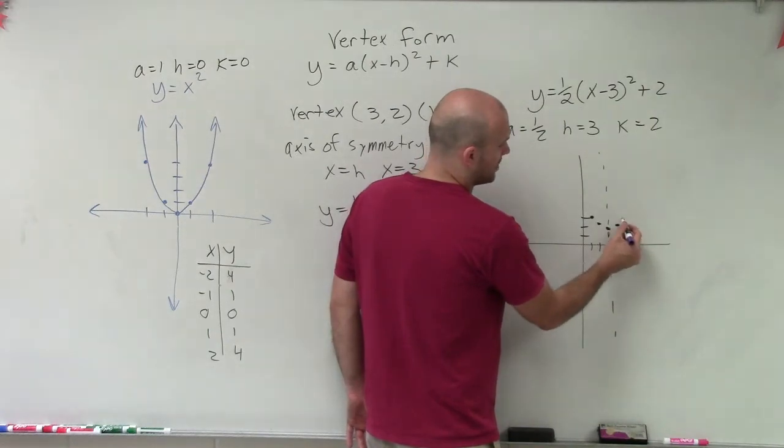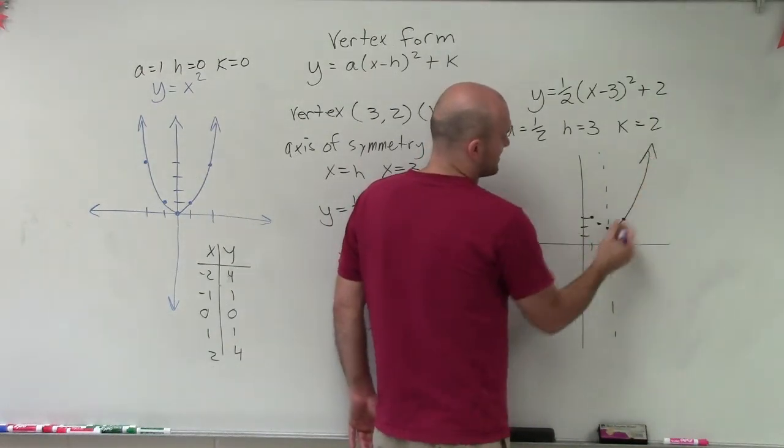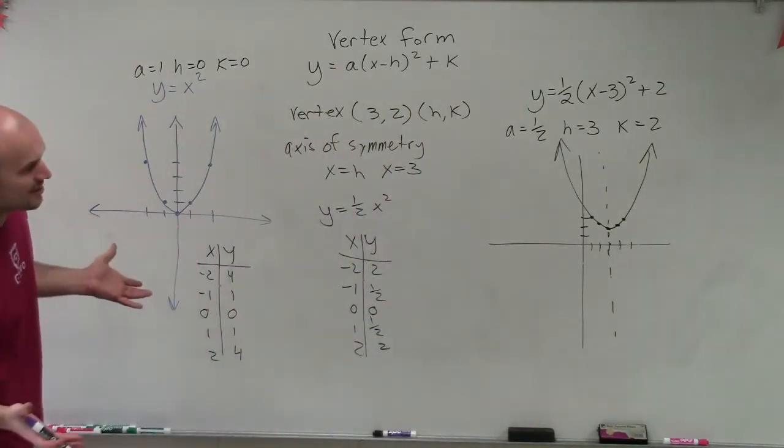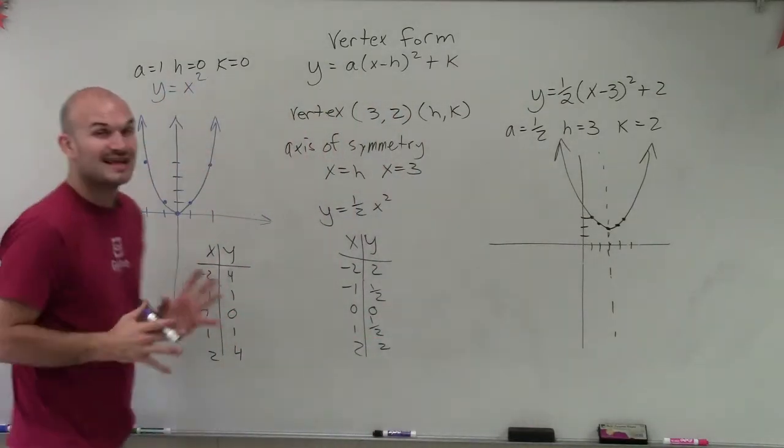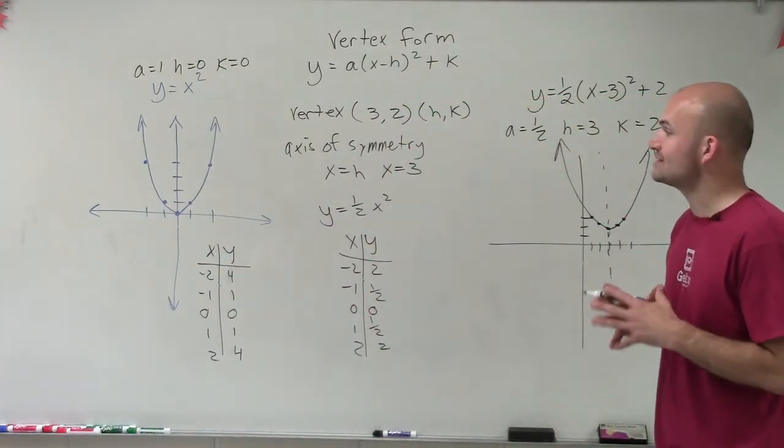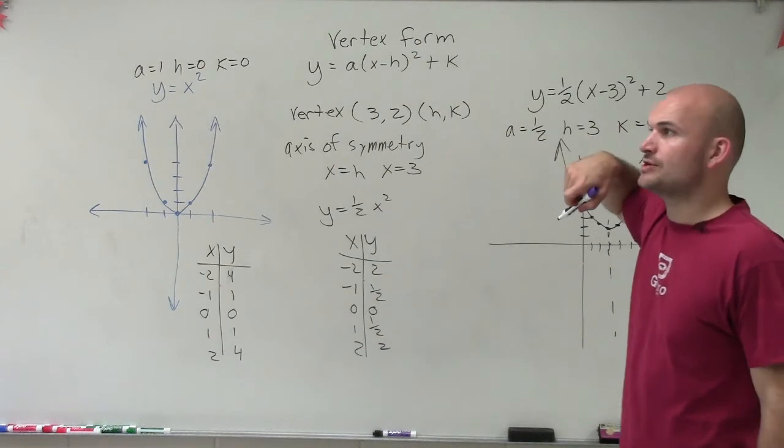And then I'll go over 2, up 1. Over 2, up 1. And so when I graph this and now complete my behavior, you can see that the graph is going to be—well, I use a little bit different scale—but you can see that it's going to be a little bit wider or horizontally stretched compared to my original parent function.